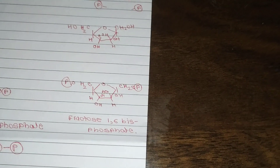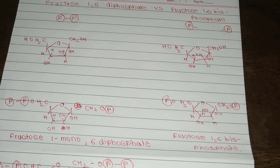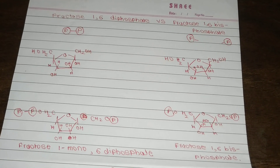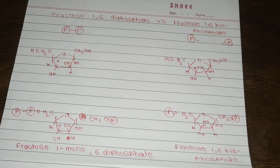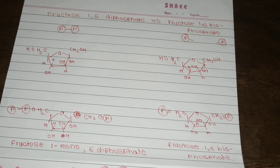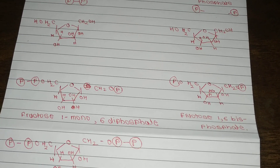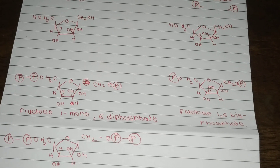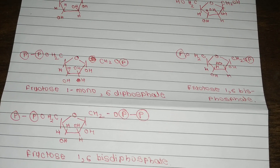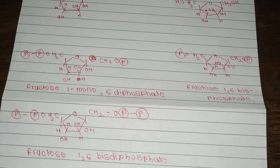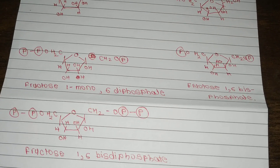Now we will try to draw the structure of fructose 1,6-diphosphate. If we attach two phosphates at the 6th position and one phosphate at the 1st position, it could be called fructose 1-mono-6-bisphosphate. If we attach two phosphates at the 6th position and two phosphates at the 1st position, it may be referred to as a form of diphosphate. This means it is not straightforward to draw a valid structure of fructose 1,6-diphosphate.